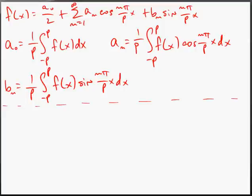Welcome to our next video, which is based on section 12.3 — Fourier cosine and Fourier sine series. I've already written the general form of a Fourier series: a₀/2 plus the summation of aₙ cosine and bₙ sine terms. I've also written out the general formulas for the coefficients a₀, aₙ, and bₙ.